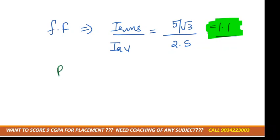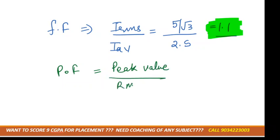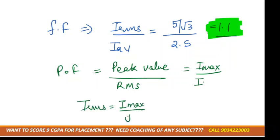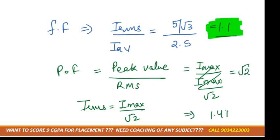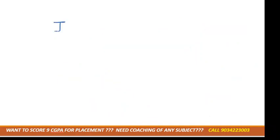They can also ask for the peak factor. The peak factor formula is peak value divided by RMS value, which is I_max divided by I_rms. Using the relationship I_rms = I_max / √2, the I_max terms cancel out, leaving √2, which equals 1.414.